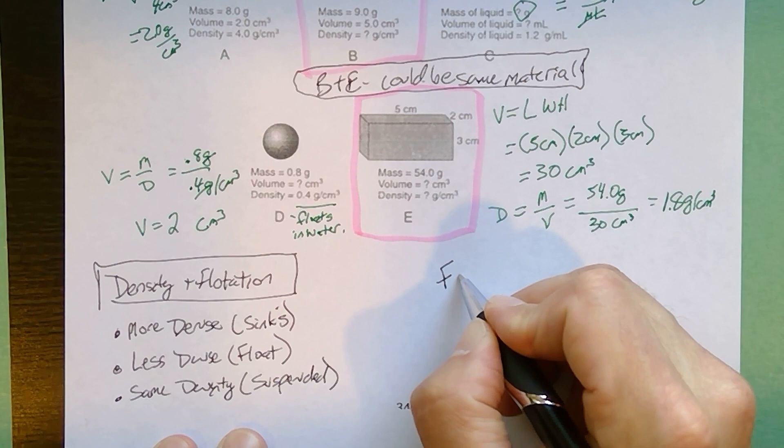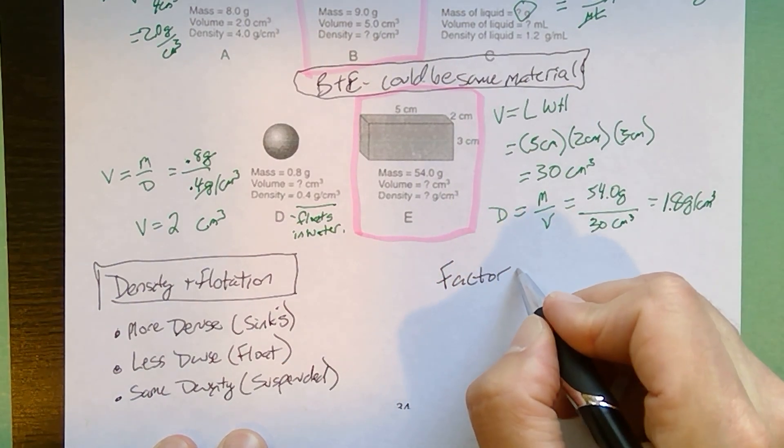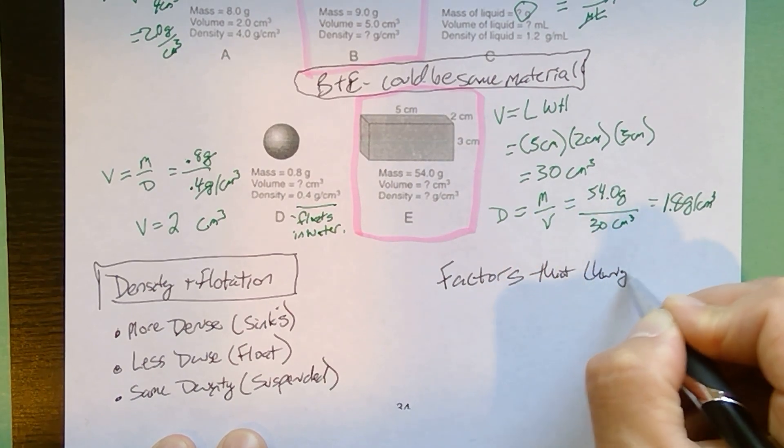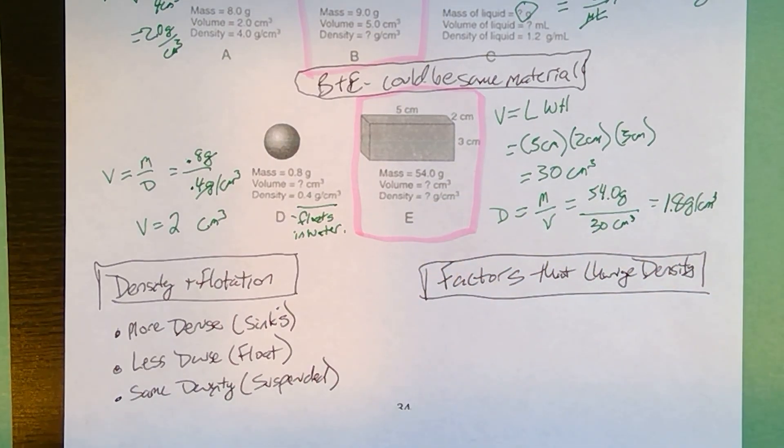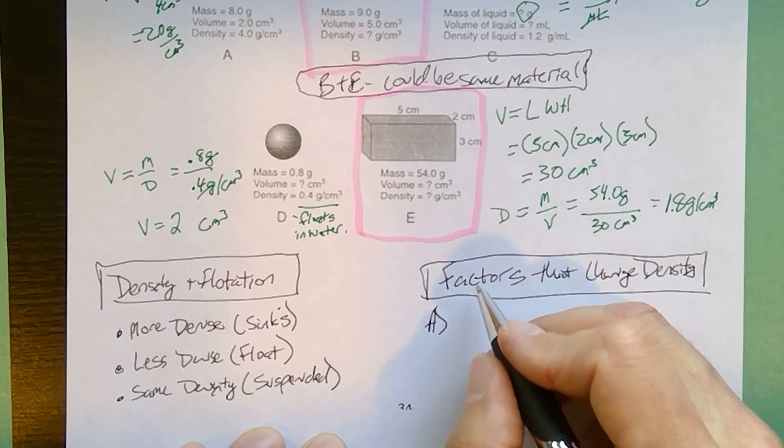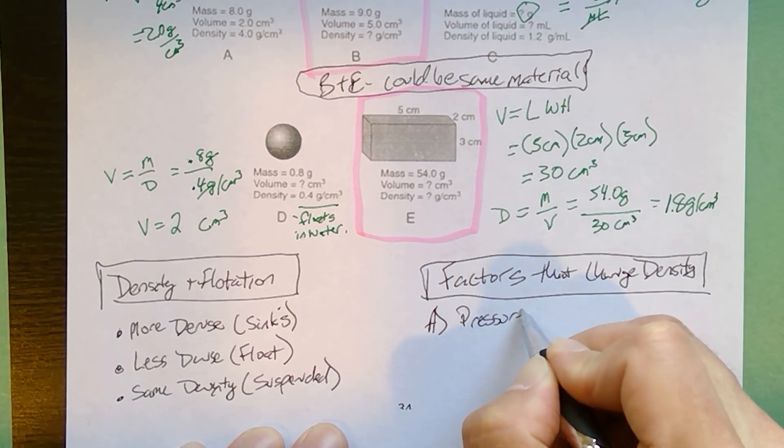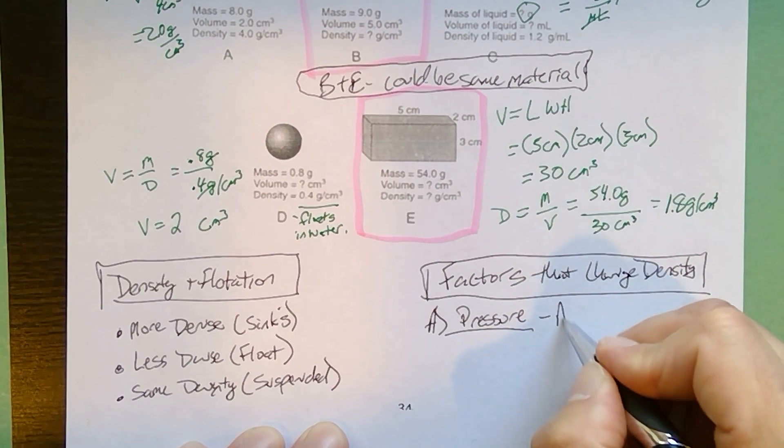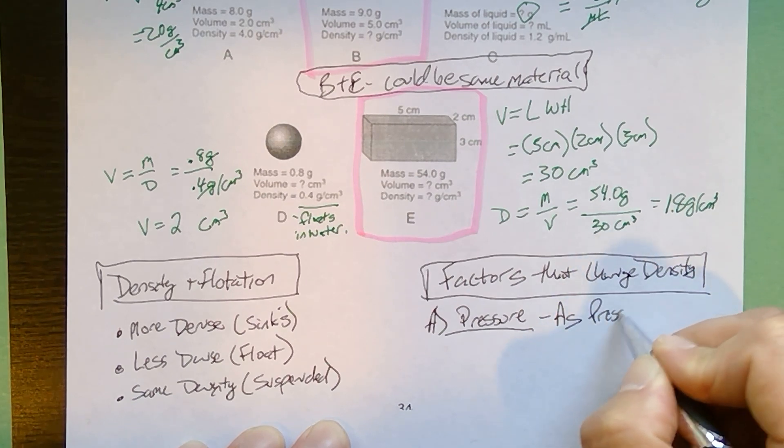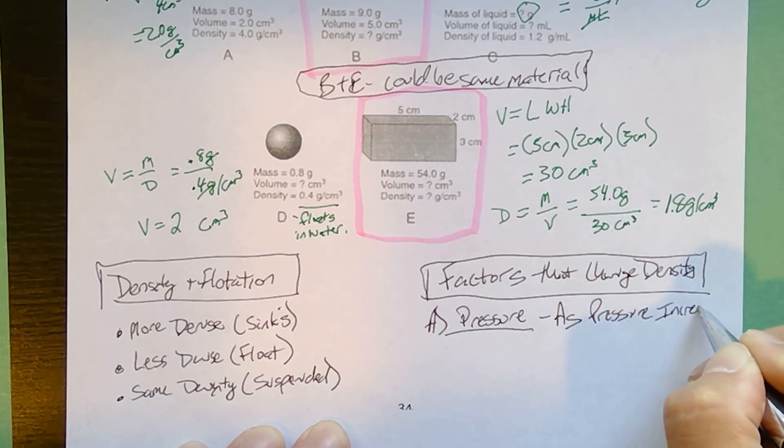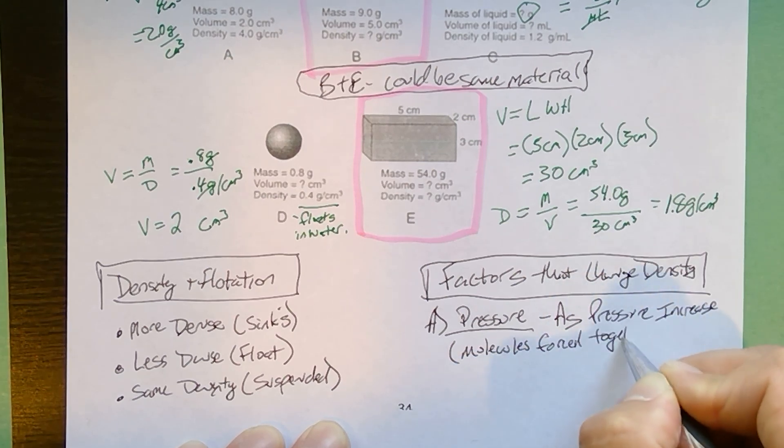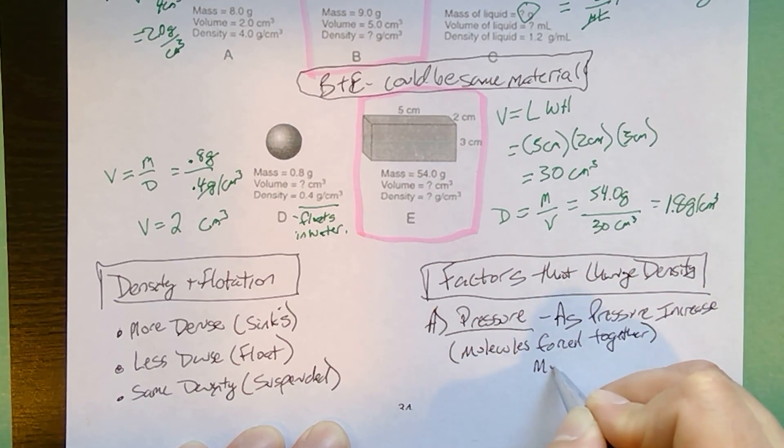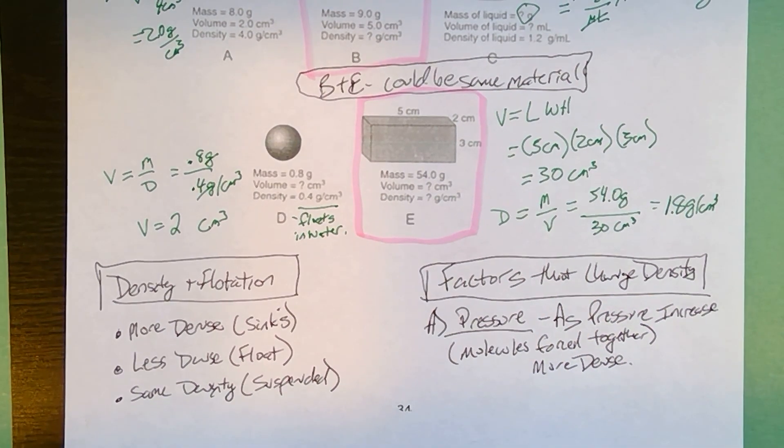You can alter the density by changing a couple of things. So factors that change density. You will be asked what happens when you change the pressure or change the temperature. And it's really important to focus on what's happening to the molecules. If I start with pressure, if I increase the pressure, I squeeze the object. Literally, that forces the molecules closer together. So as pressure increases, the molecules are forced together, and that's why it's going to become more dense. The more tightly packed the molecules, the higher the density.